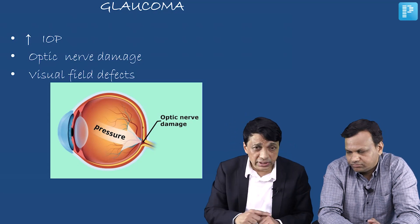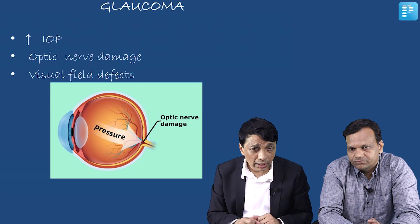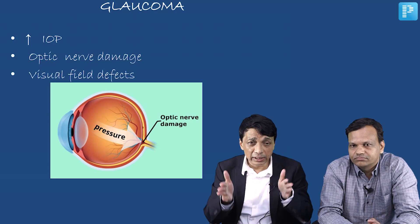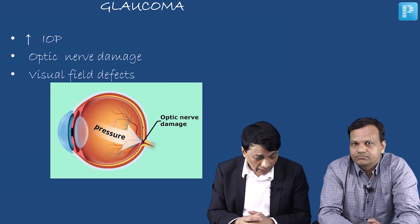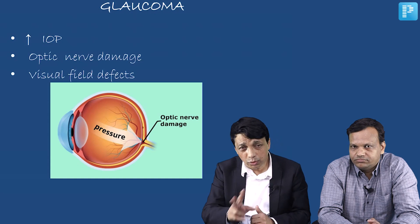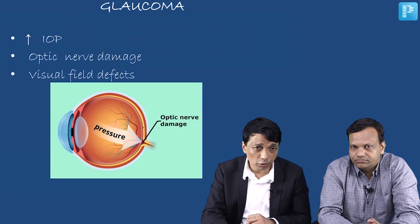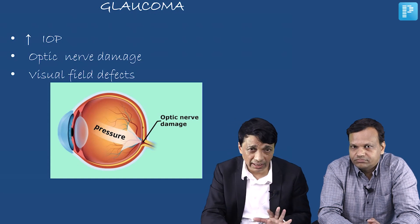This is an interesting graphic where the pressure is shown rising up, damaging the optic nerve and leading to a loss of visual fields. Now, remember that we do not need all three to make a diagnosis of glaucoma — just two are enough, any two in fact.